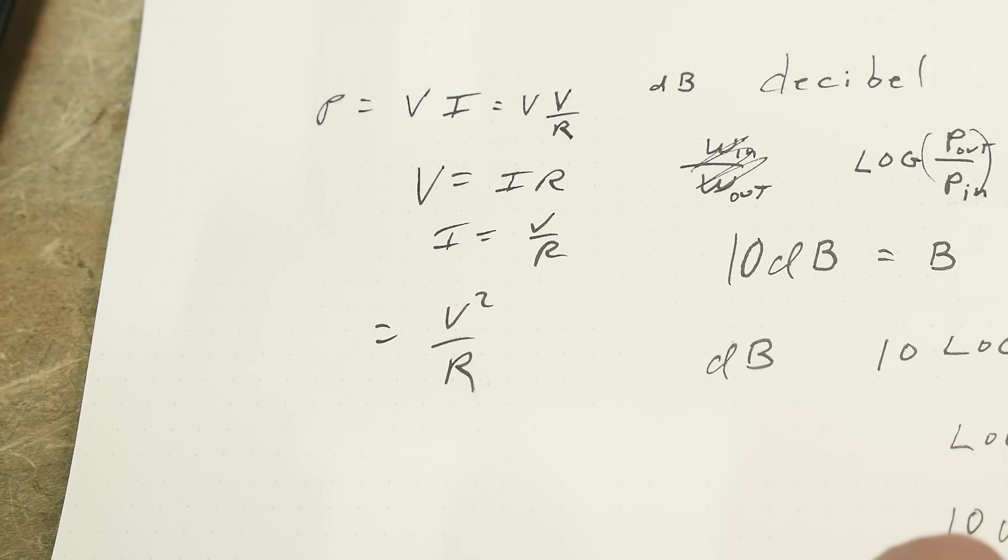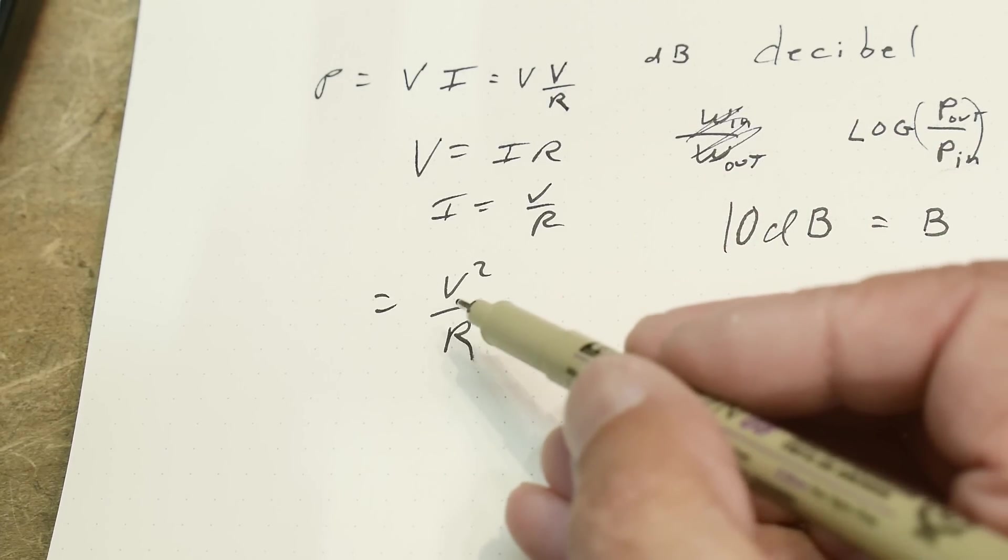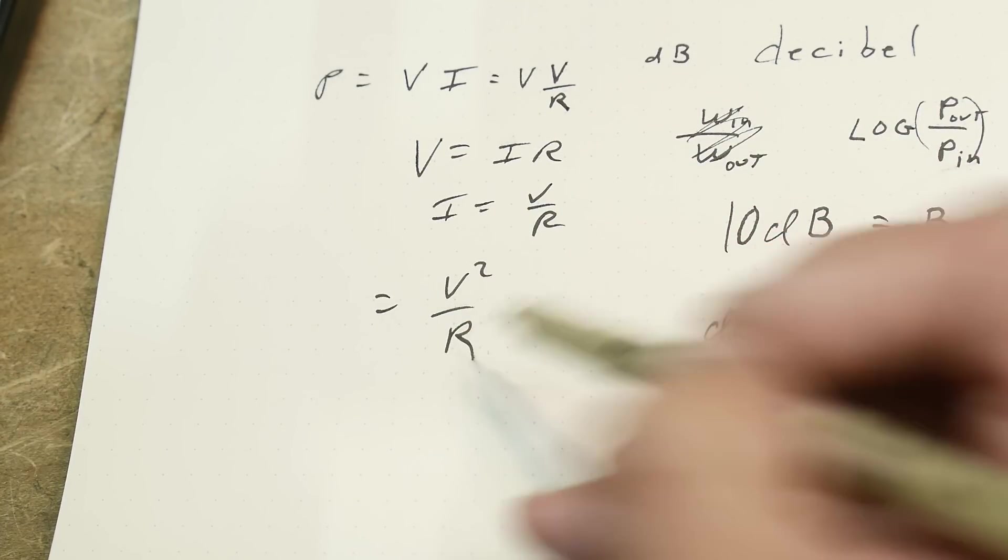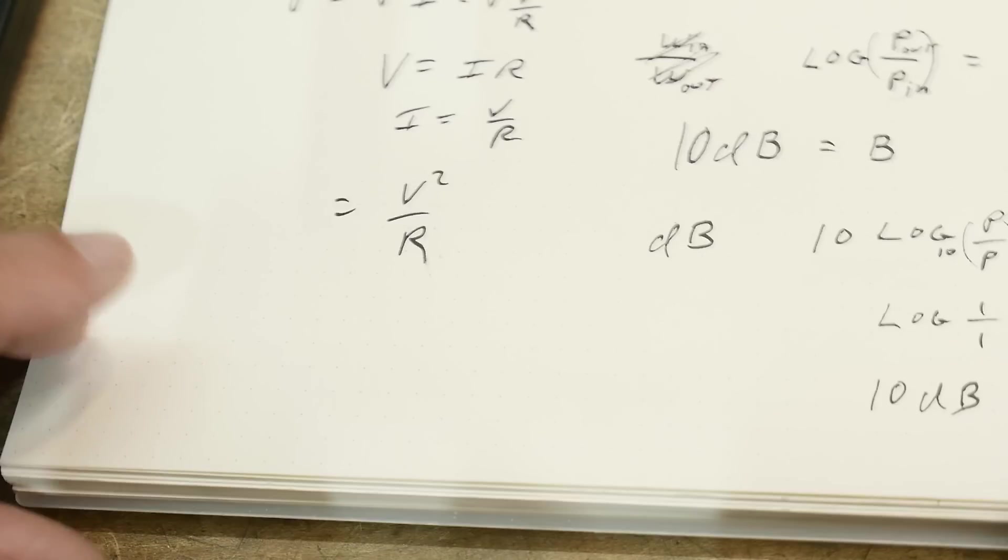You plug that in here, you get power equals V squared over R. So if you're measuring voltage and you don't want to know what the power is, you need to do this to it, you need to square it and then divide it by the resistance.